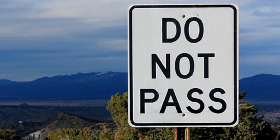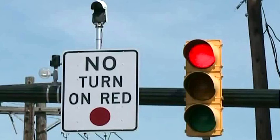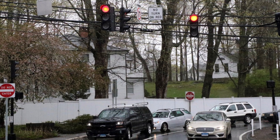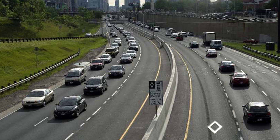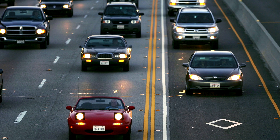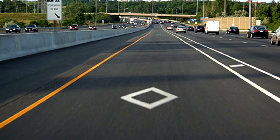Do Not Pass: This sign indicates that you may not pass. No Turn on Red: You may not turn during the red light — you must wait for the signal to turn green. High Occupancy Vehicle: This lane is reserved for vehicles carrying at least two or more persons as noted on the sign. A white diamond may be painted on the lane.